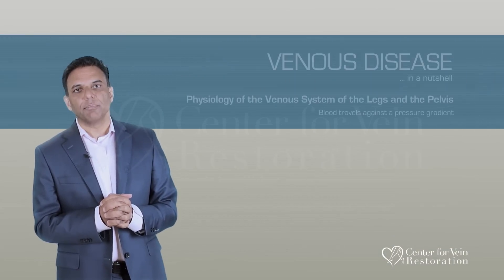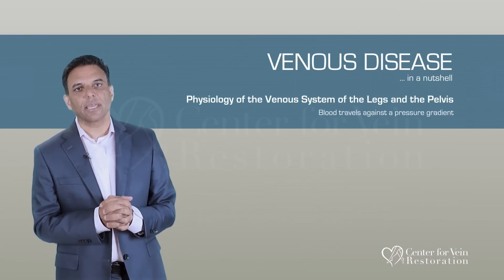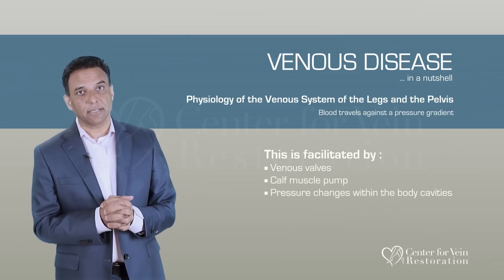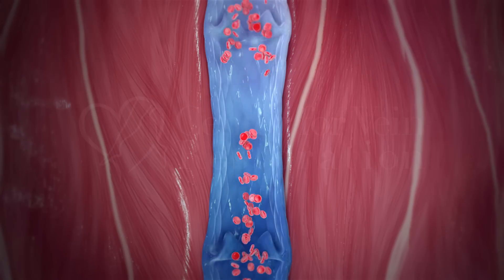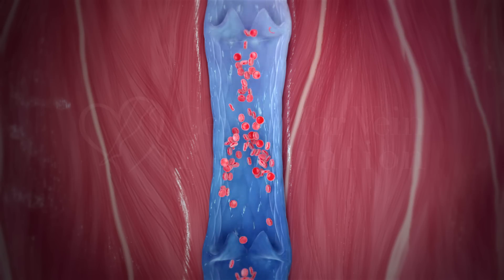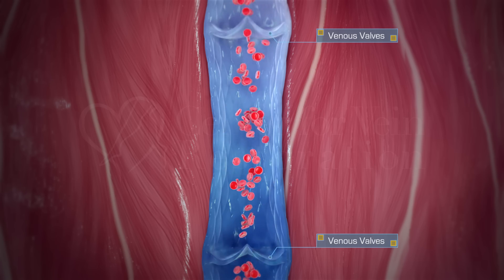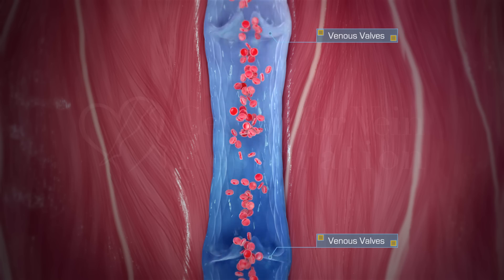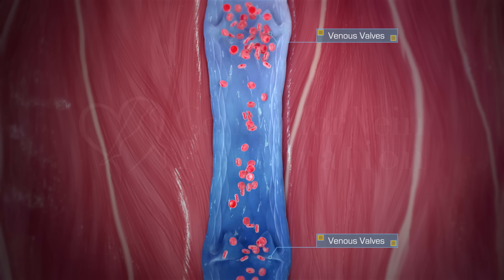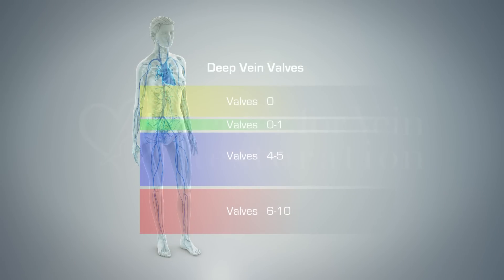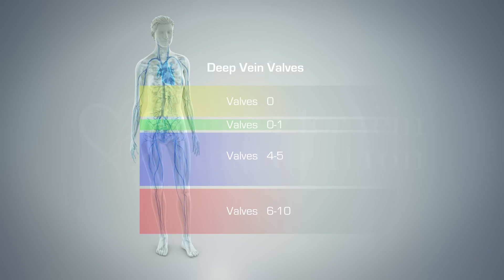In the standing position, blood has to travel back up to the heart against a pressure gradient of over 100 millimeters of mercury. To facilitate that, nature has come up with a system of ingenious mechanisms. One such mechanism involves strategically placed anatomical enhancements that prevent blood from falling down a certain column. These enhancements are called venous valves. The closer we are to the ground in our standing state, the higher the gravitational pull, and to counter that, more numerous are the valves.